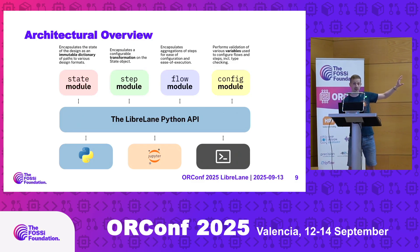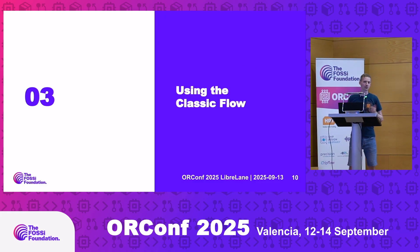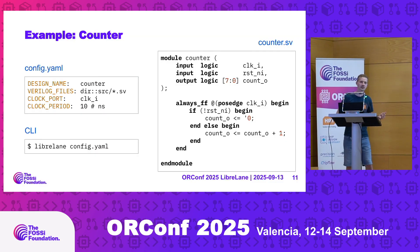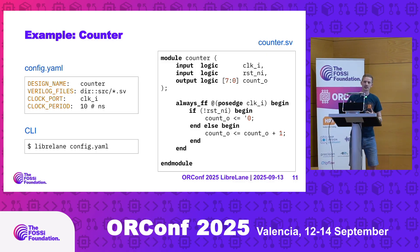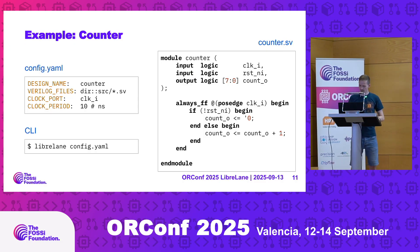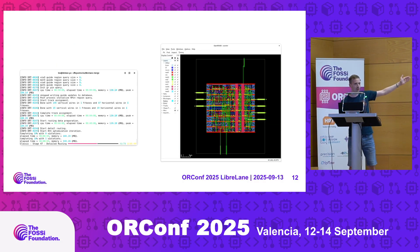All of this is accessible via the LibreLane Python API, which can be accessed through Python. You can write Jupyter notebooks and use LibreLane from the command line. So what do we need to create a design in LibreLane? Of course you need your design — on the right we have a simple 8-bit counter in SystemVerilog. Then we need a configuration file. The minimum you need is: design name, which is your top-level cell; Verilog files and where to find them; the clock port and the clock period. LibreLane will use a default SDC file, but you can also supply your own. Finally, we invoke LibreLane with the config file, it runs through the whole flow and executes all of the steps, and in the end you can view your design using the OpenROAD GUI.